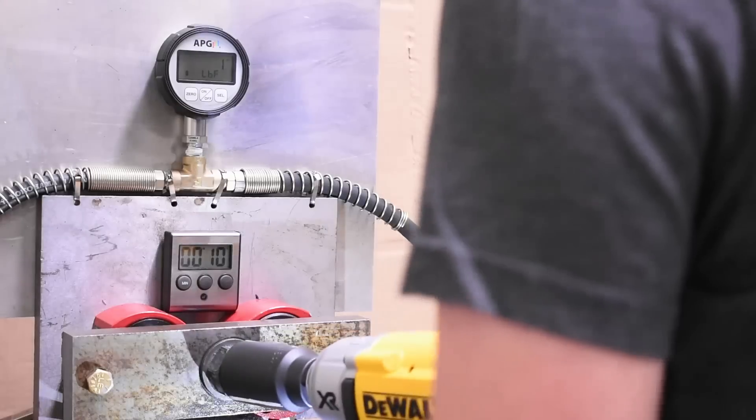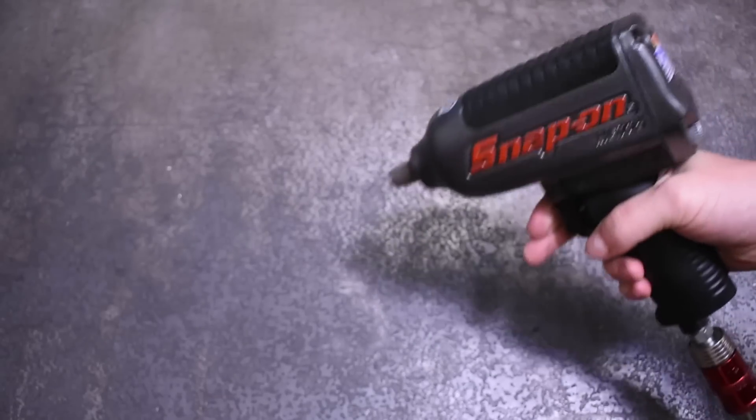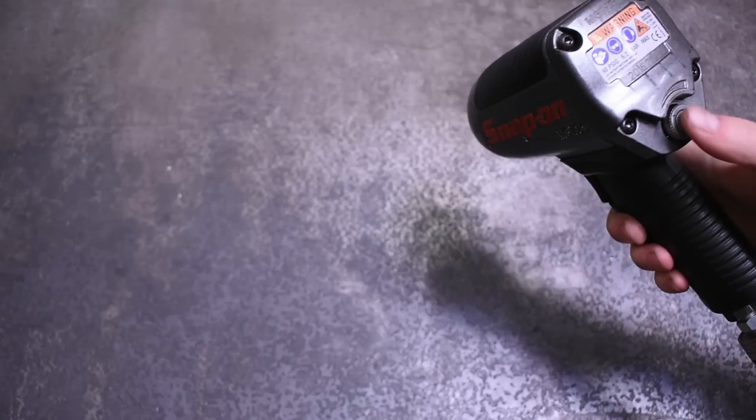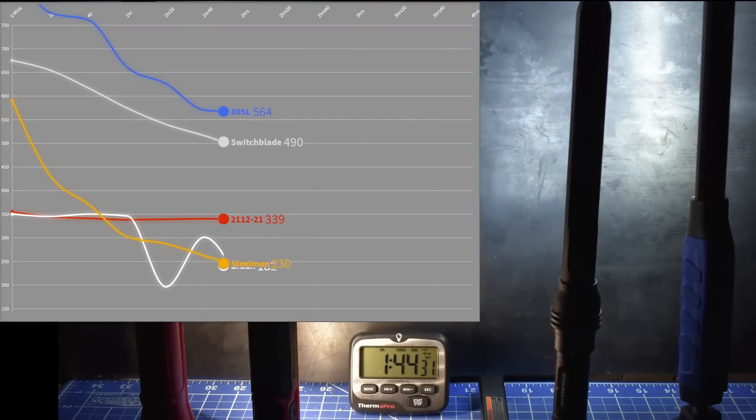On an air tool, maybe the compressor will kick on, but for the most part, it's grab and go. With cordless, it could be a downward slope to uselessness, like the lights we test. We'll have to see.